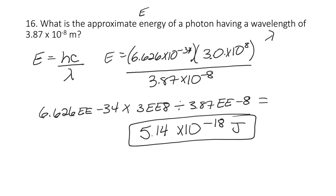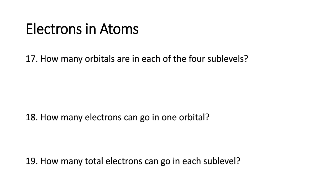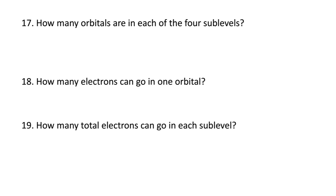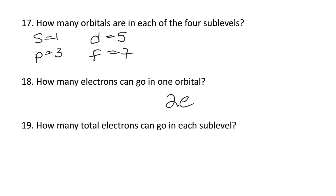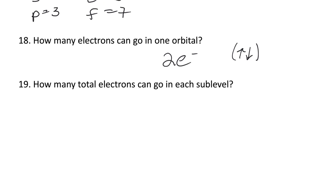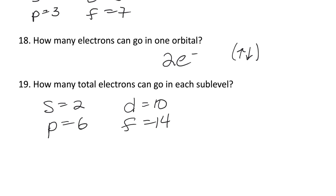If you have any questions you can always get a hold of me and I can do a tutoring session before the test. Now we're going to talk about electrons and atoms. How many orbitals are in each of the four sublevels? In S there's 1, P there's 3, D there's 5, and F there's 7. How many electrons can go in one orbital? Two electrons — one counterclockwise and one clockwise, shown with an arrow up and an arrow down. How many total electrons can go in each sublevel? S can have 2, P can have 6, D can have 10, and F can have 14.